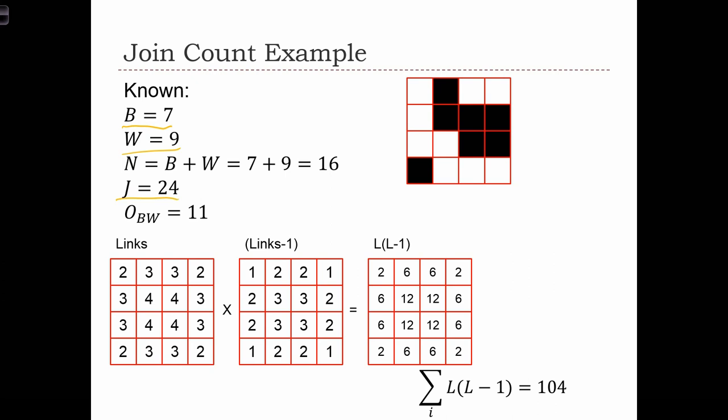But let's count the black-white joins. We've got 1, 2, 3, 4, 5. Those are the horizontal ones. And 6, 7, 8, 9, 10, 11. So we have 11 black-white joins. Our observed number of black-white is 11.